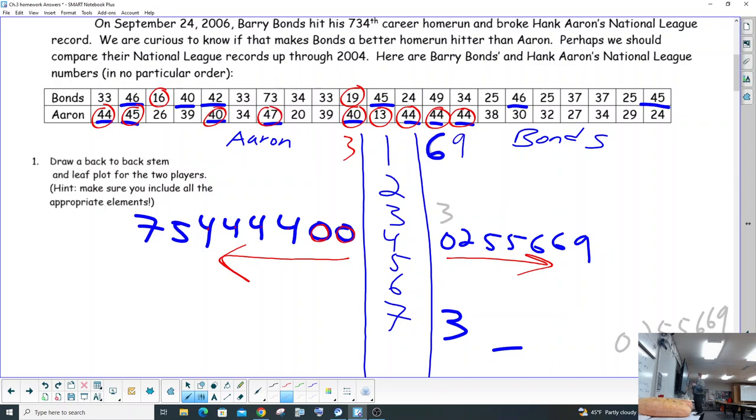Then we had a 45, and we had a 47, and that was all the 40s for Hank Aaron. And then Barry Bonds, trying to figure out who's the better home run hitter. So Barry Bonds, his 40s, let's take a look. We had a 40 right there, and then a 42, and then a 45, and a 45. So we put 0, 2, 45, 45.